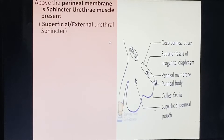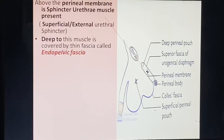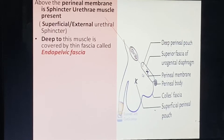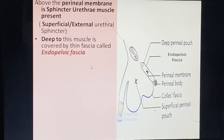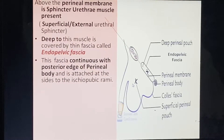Above the perineal membrane is the sphincter urethrae muscle. Deep to this muscle it is covered by a thin fascia known as the endopelvic fascia. This fascia continues with the posterior edge of the perineal membrane and perineal body, and is attached to the sides of the ischiopubic rami.